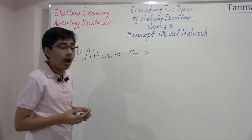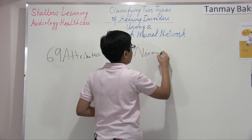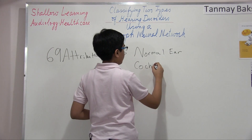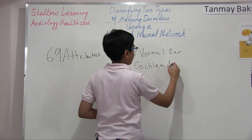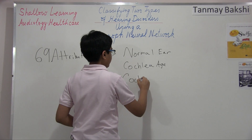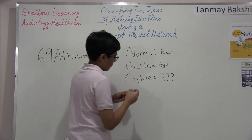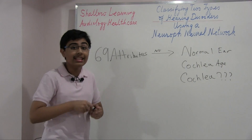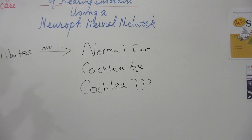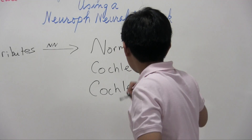We are going to output either that the patient has a normal ear, or that their cochlea has aged and that's their hearing problem, or that it's something to do with their cochlea but we don't exactly know what it is. I'll explain a lot more about what's going on in the middle of the neural network in the actual coding part, but let's go through a little science explanation right now.